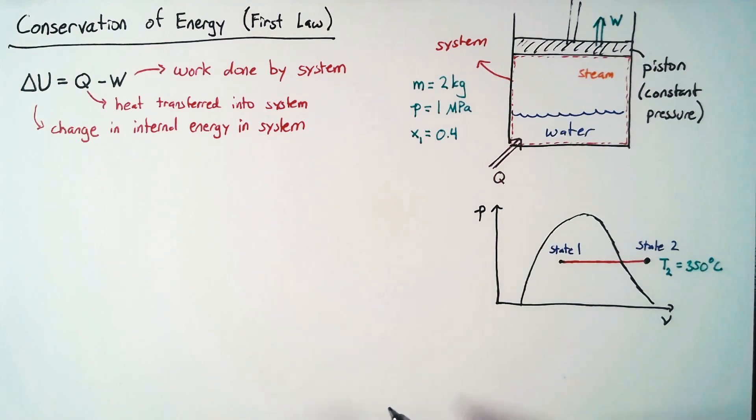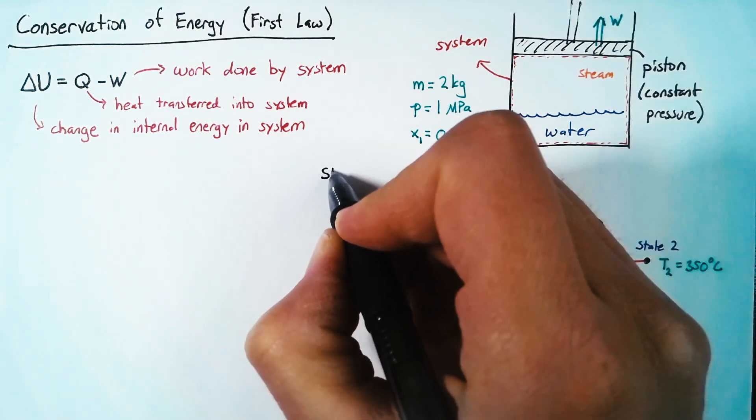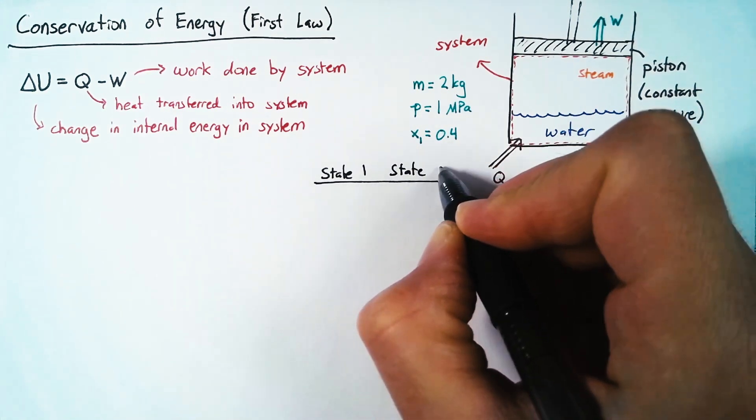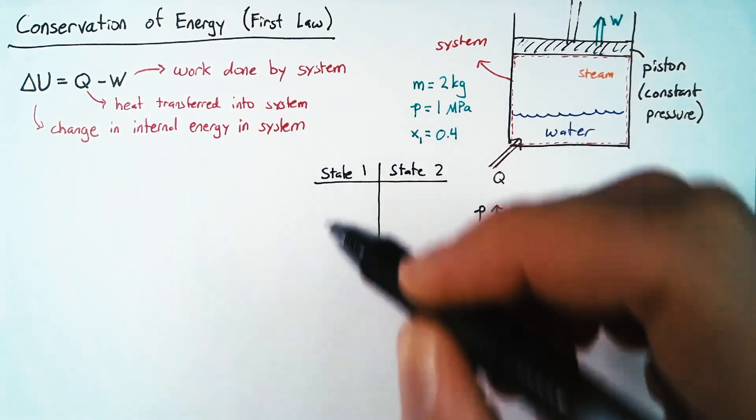So at this point, we actually have enough information to completely define everything about both state 1 and 2. So what we'll do now is just build a table that will contain all of that information.